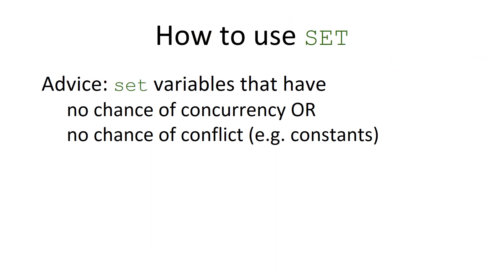In this distributed world using set, I recommend using it for constants or things that are close to constants — like if you reset something every hour, that's basically a constant because it has no chance of concurrency. There are actually a ton of use cases that have no chance of concurrency; the use case itself prohibits or is never concurrent. So set works for those, but you have to examine the use cases.